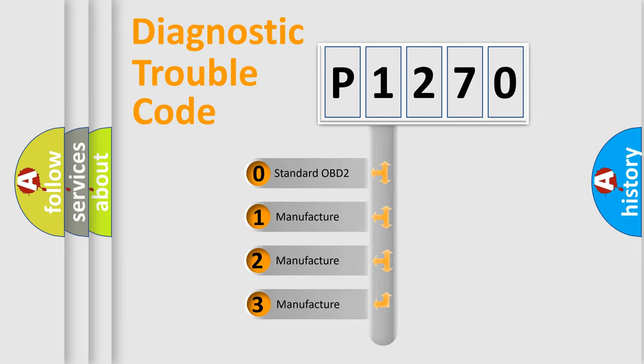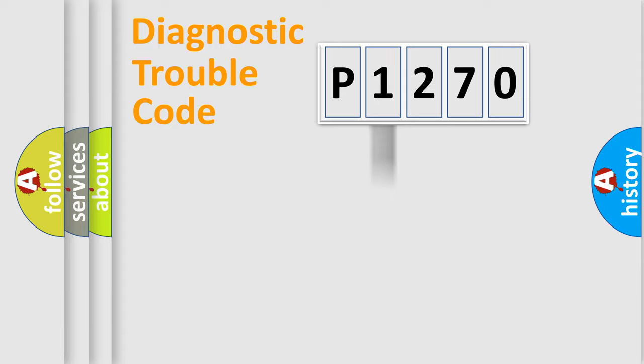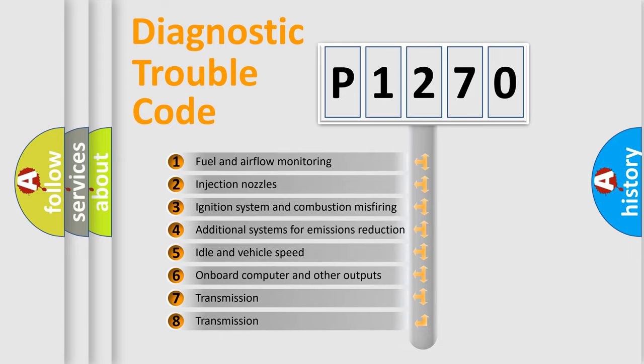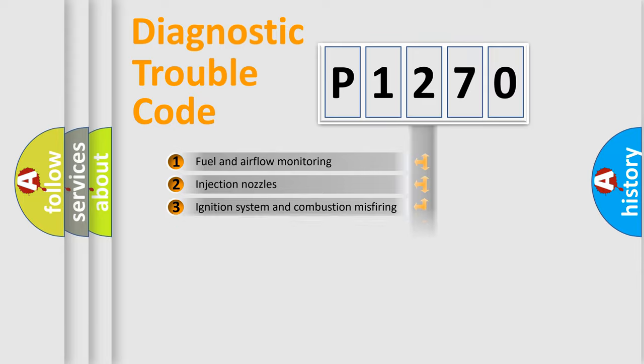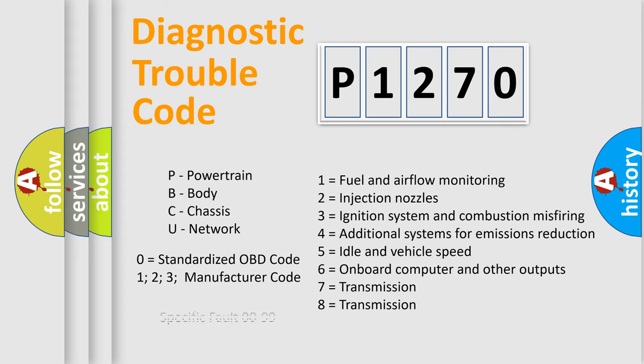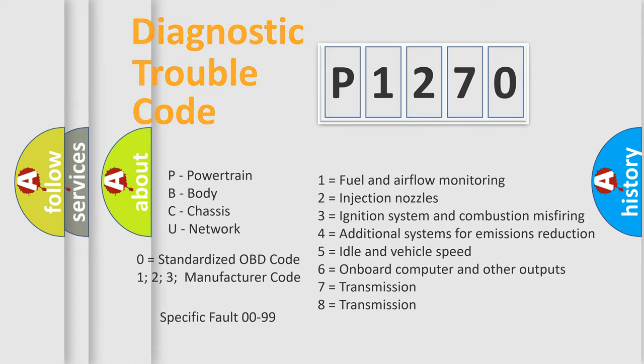If the second character is expressed as zero, it is a standardized error. In the case of numbers 1, 2, 3, it is a manufacturer-specific error. The third character specifies a subset of errors. The distribution shown is valid only for the standardized DTC code. Only the last two characters define the specific fault of the group. Let's not forget that such a division is valid only if the other character code is expressed by the number zero.